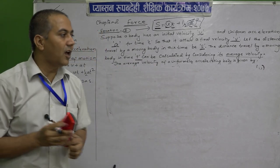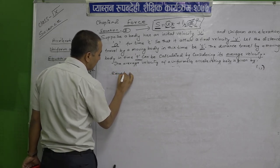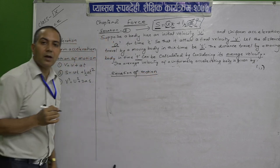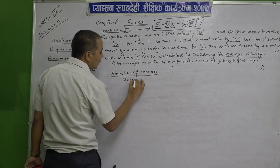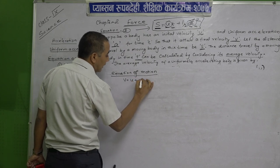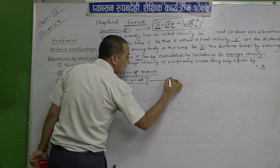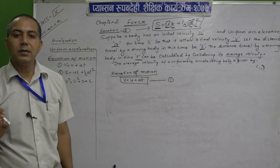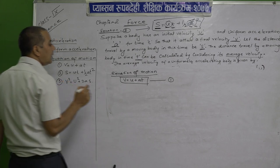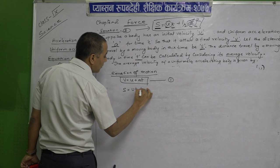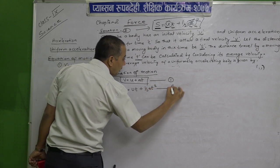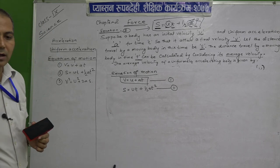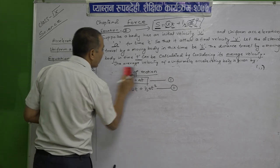What we have studied: the equations of motion and their derivations. The first one is v equals to u plus at. The second equation is s equals to ut plus half at square. First and second equations have been derived. Now let us come to the third equation.